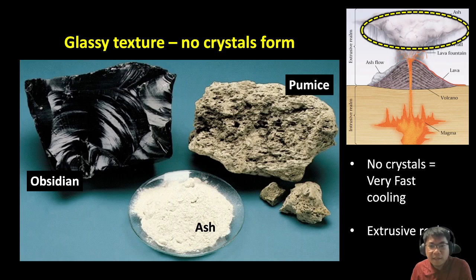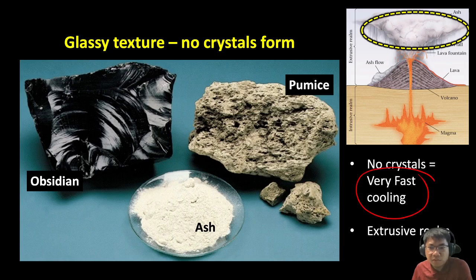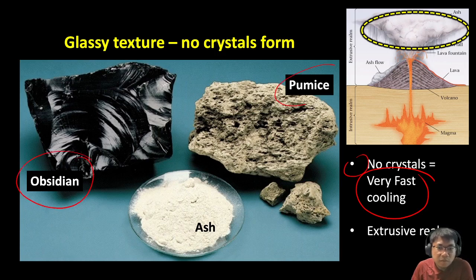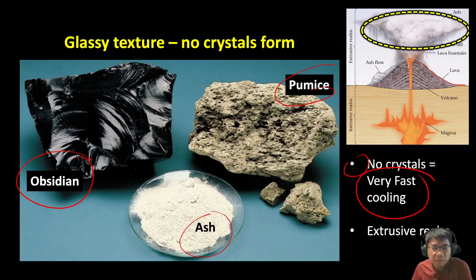If lava cools very, very rapidly, there won't be any crystals that form. Examples include obsidian, pumice, or ash — these are volcanic materials that underwent very fast cooling. They are also part of the extrusive realm because they form above the surface.